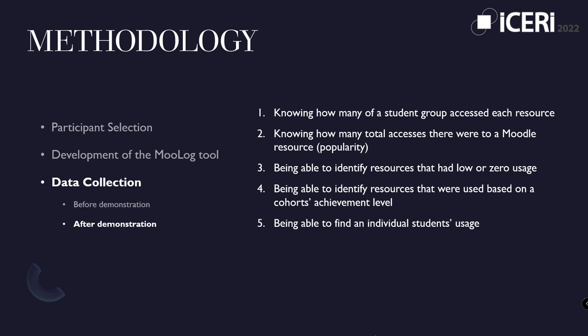The post-demonstration survey collected participants' perception of the usefulness of the mined data. When processed as information in the form of a chart in MooLog, participants could know how many students in a group accessed each resource, how many total accesses there were to a Moodle resource — effectively its popularity — and it enabled identification of resources with low or zero usage, resources used based on a cohort's achievement level, and the ability to find an individual student's usage. Participants rated each item as not useful, slightly useful, useful, important, or essential.